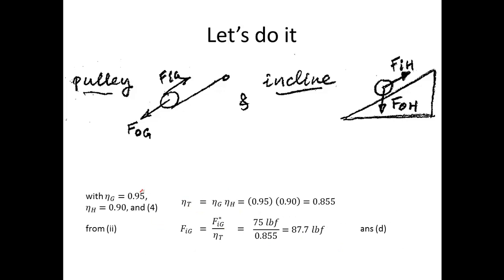With efficiencies of 95% for G and 90% for H, using equation 4 gives a total composite efficiency of 0.855 — just the product of the two. From the toolbox, the actual force to pull on the rope equals the lossless force divided by the efficiency: 75 divided by 0.855 gives 87.7 pound-force. That answers part D — and that's how you solve this compound machine with a pulley and inclined plane combination.